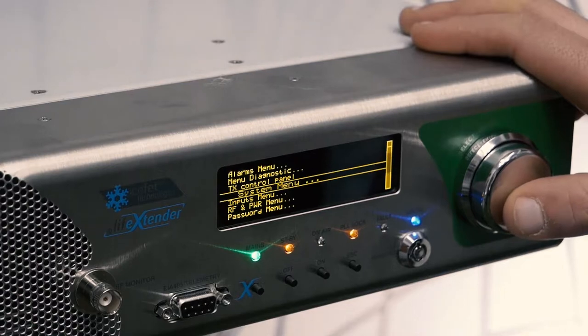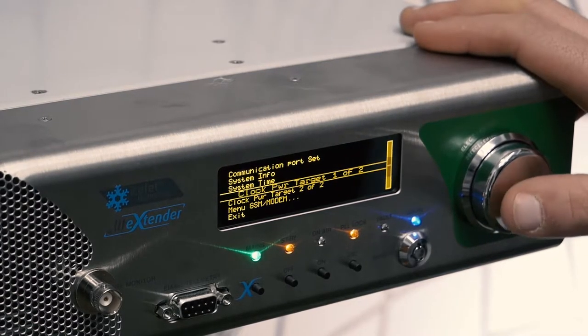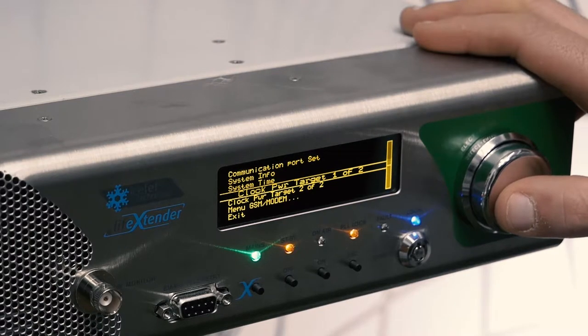From the menu, you have to go to System Menu, Clock Power Target, one of two.